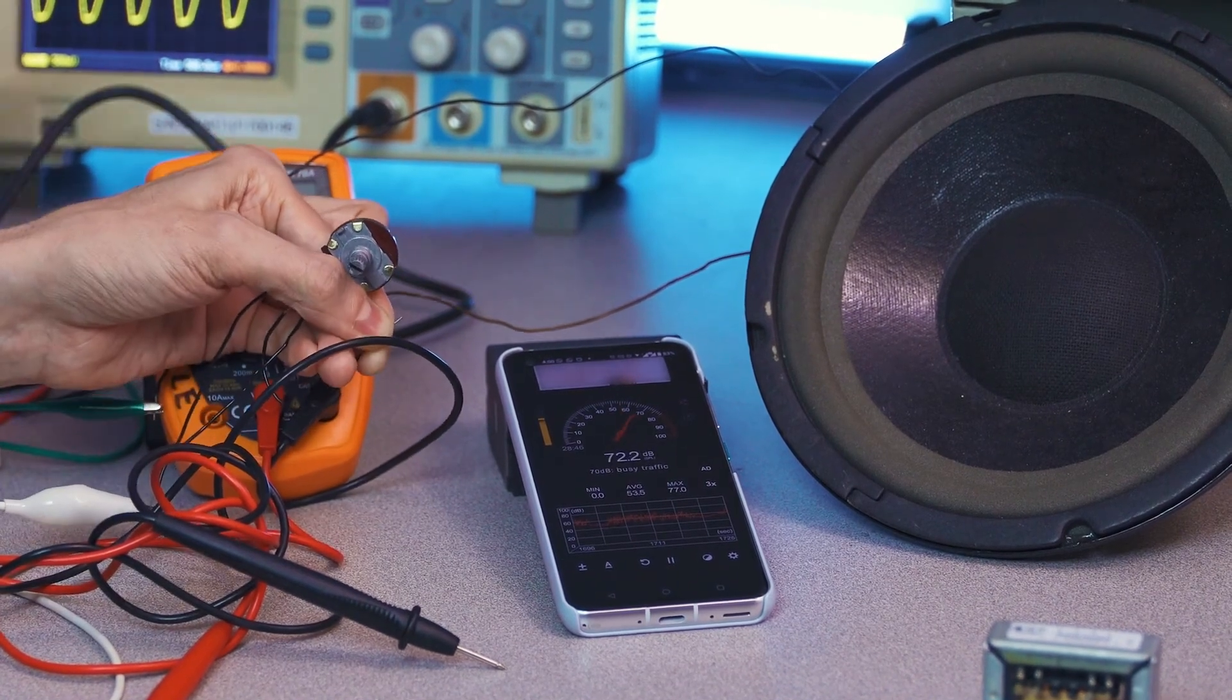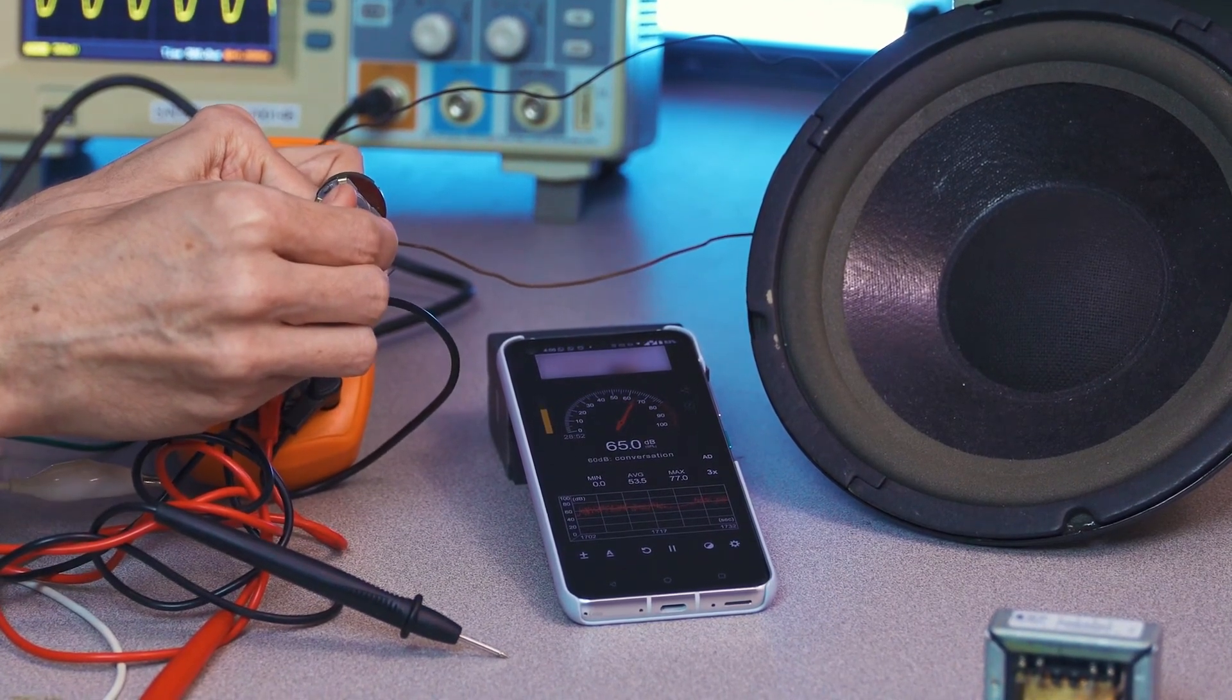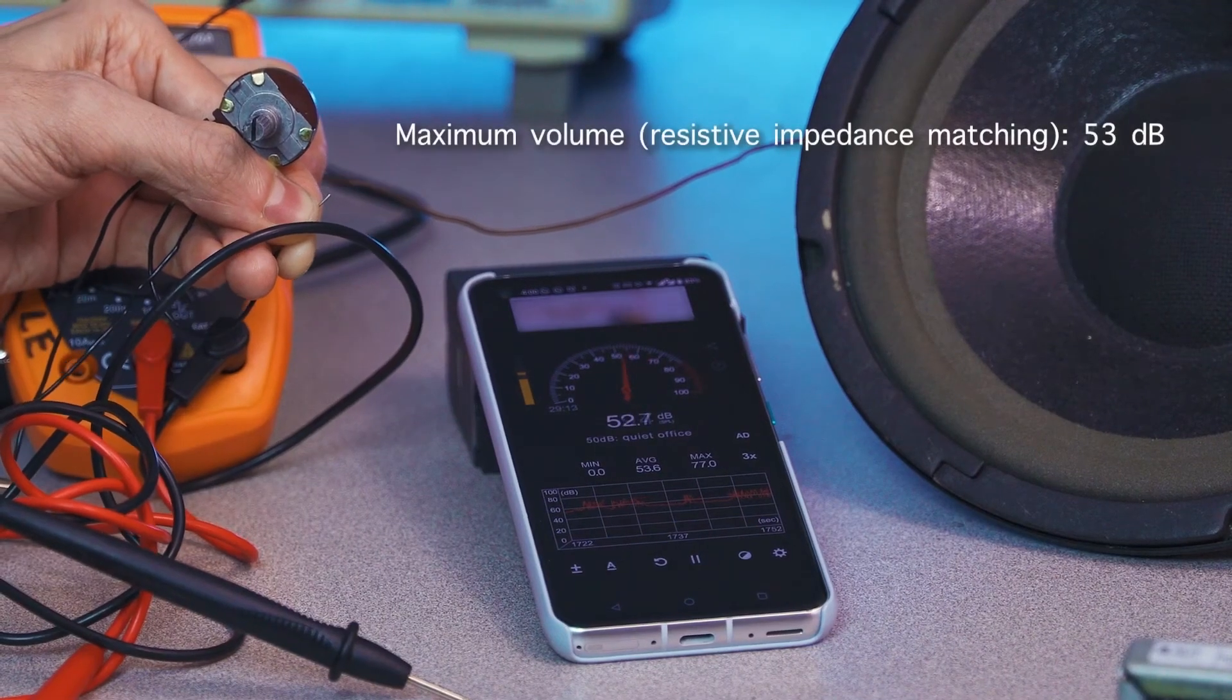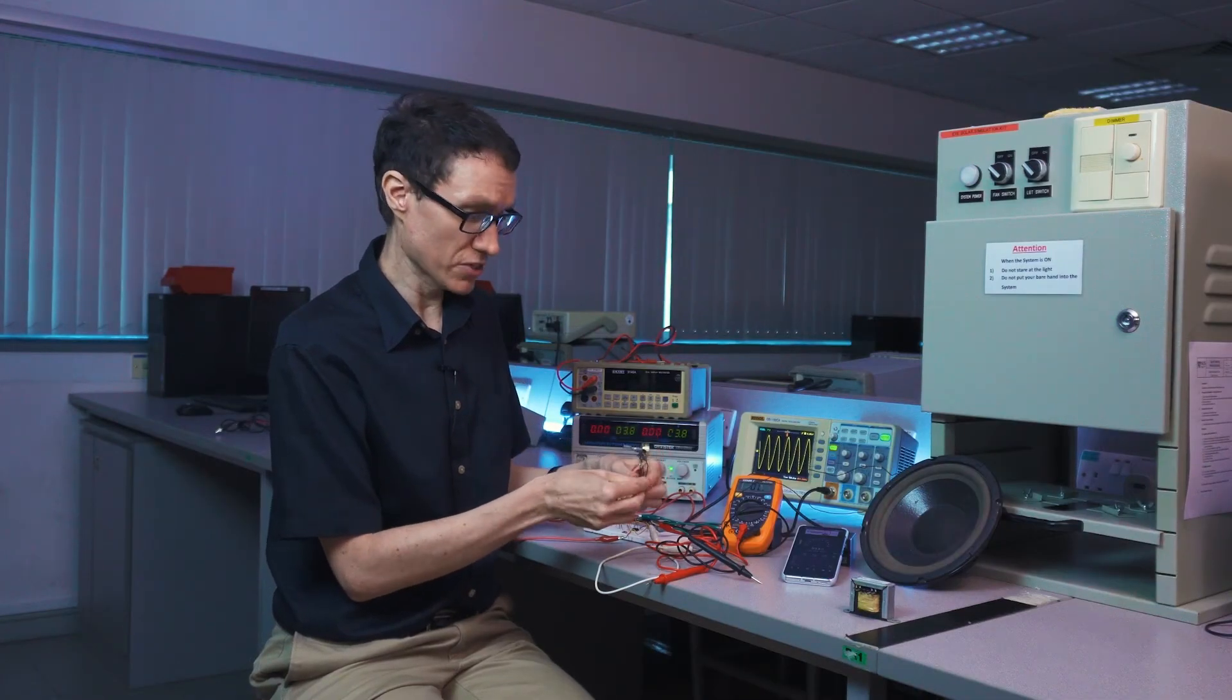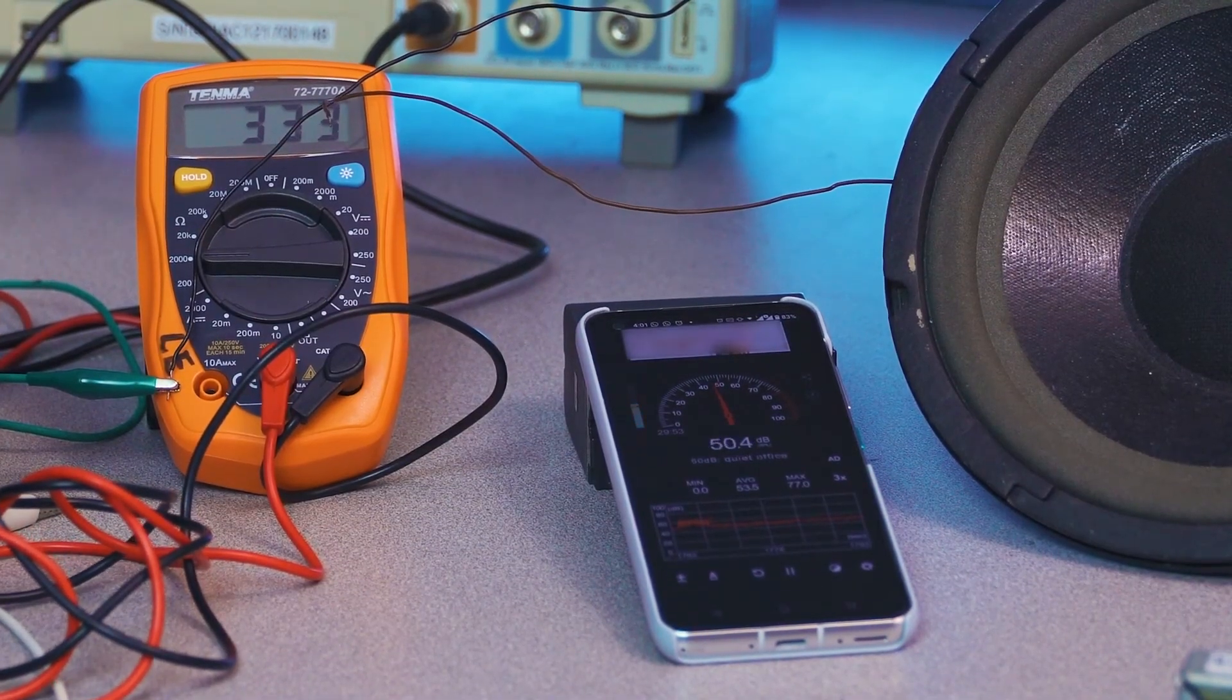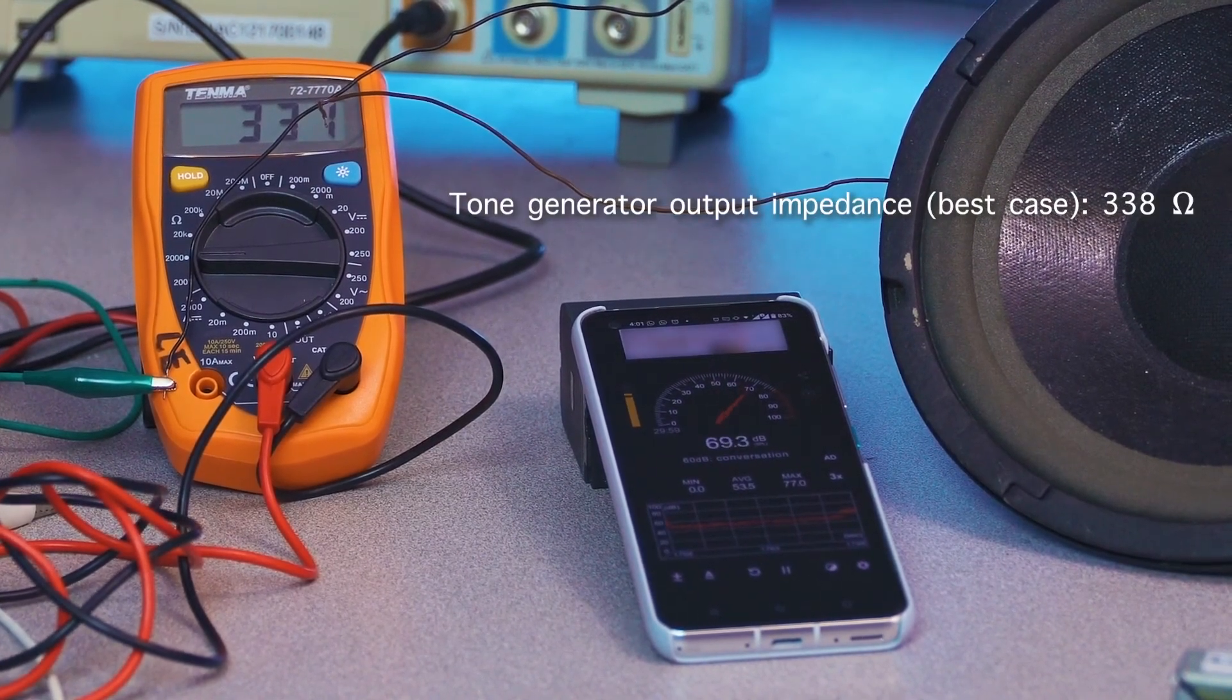So our waveform has started to distort. We've gone too far. Let's find the maximum possible volume without the waveform being distorted. It's right about here. I'm seeing about 53 or 54 decibels here on our meter. Now that's when I'm not talking. Let's see what the impedance is of our potentiometer here, which was able to achieve that particular volume. The meter is showing about 330 ohms. So it would be about 338 ohms if I add the resistance of the speaker itself.